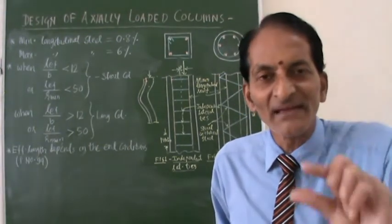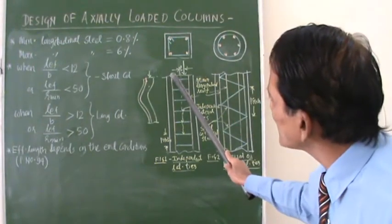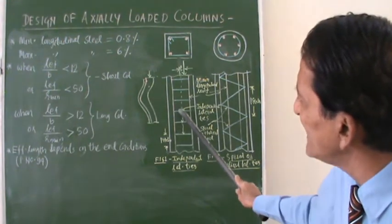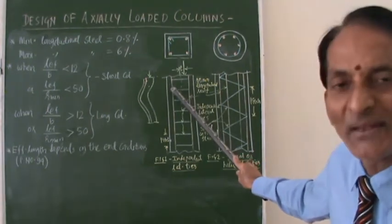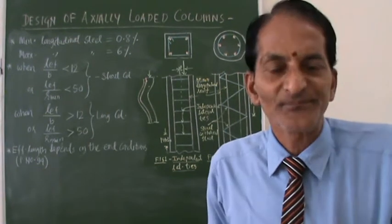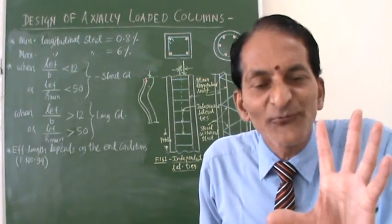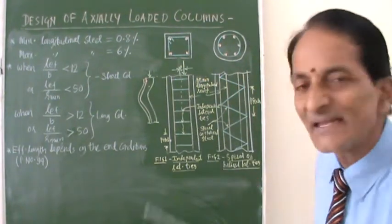It is very thin. By tying this longitudinal reinforcement by means of these ties, its effective length becomes reduced, so your longitudinal steel will not buckle. The first and foremost function of your lateral ties is they do not allow the longitudinal steel to buckle.